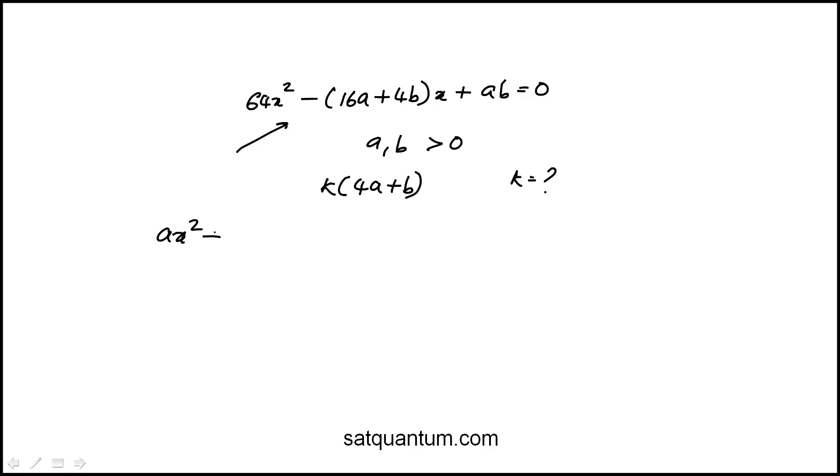So if you're given a general quadratic, and you do need to know this result, that the sum of the two roots, sum of the two roots or sum of the solutions, is equal to minus b over a.